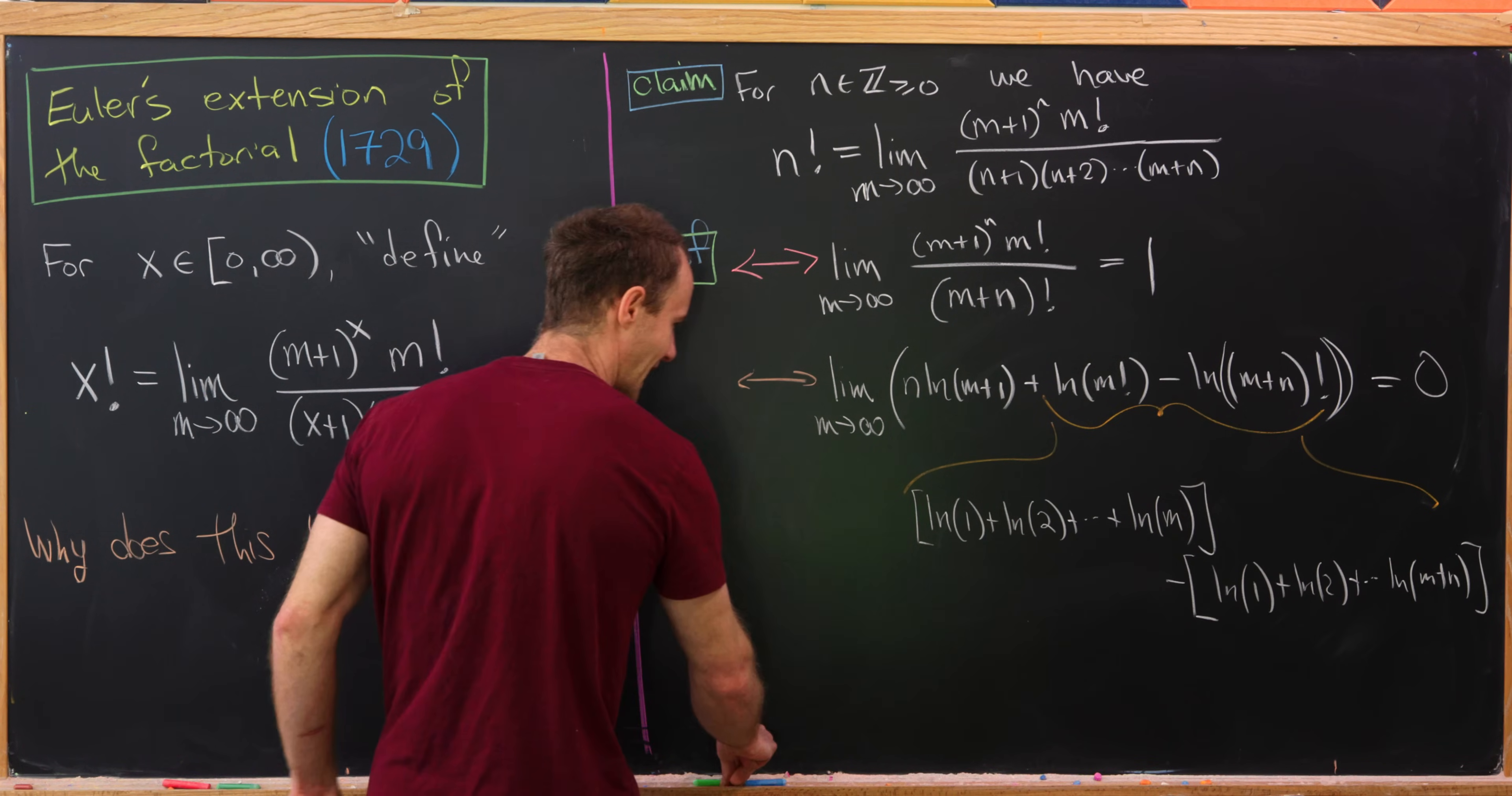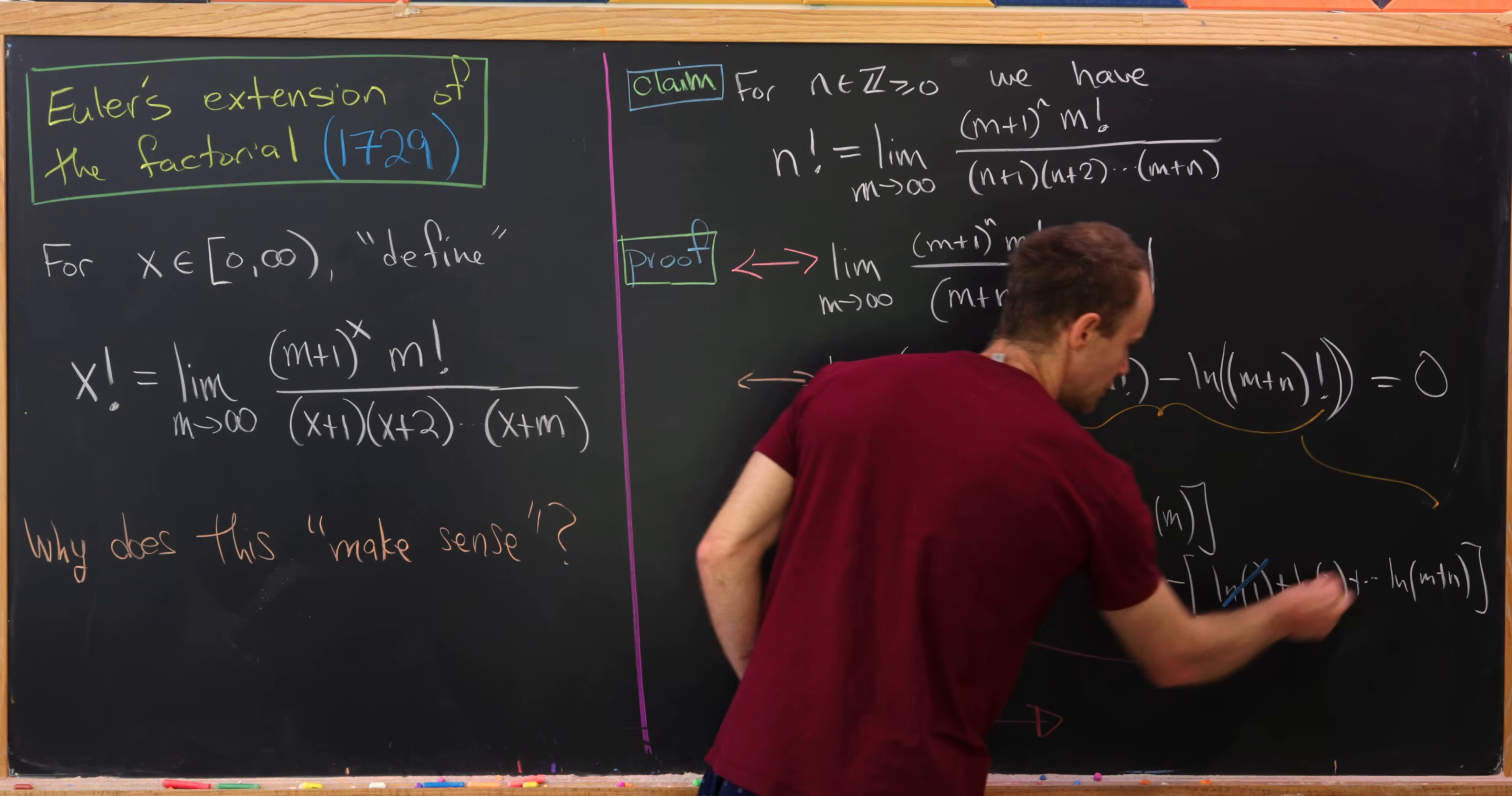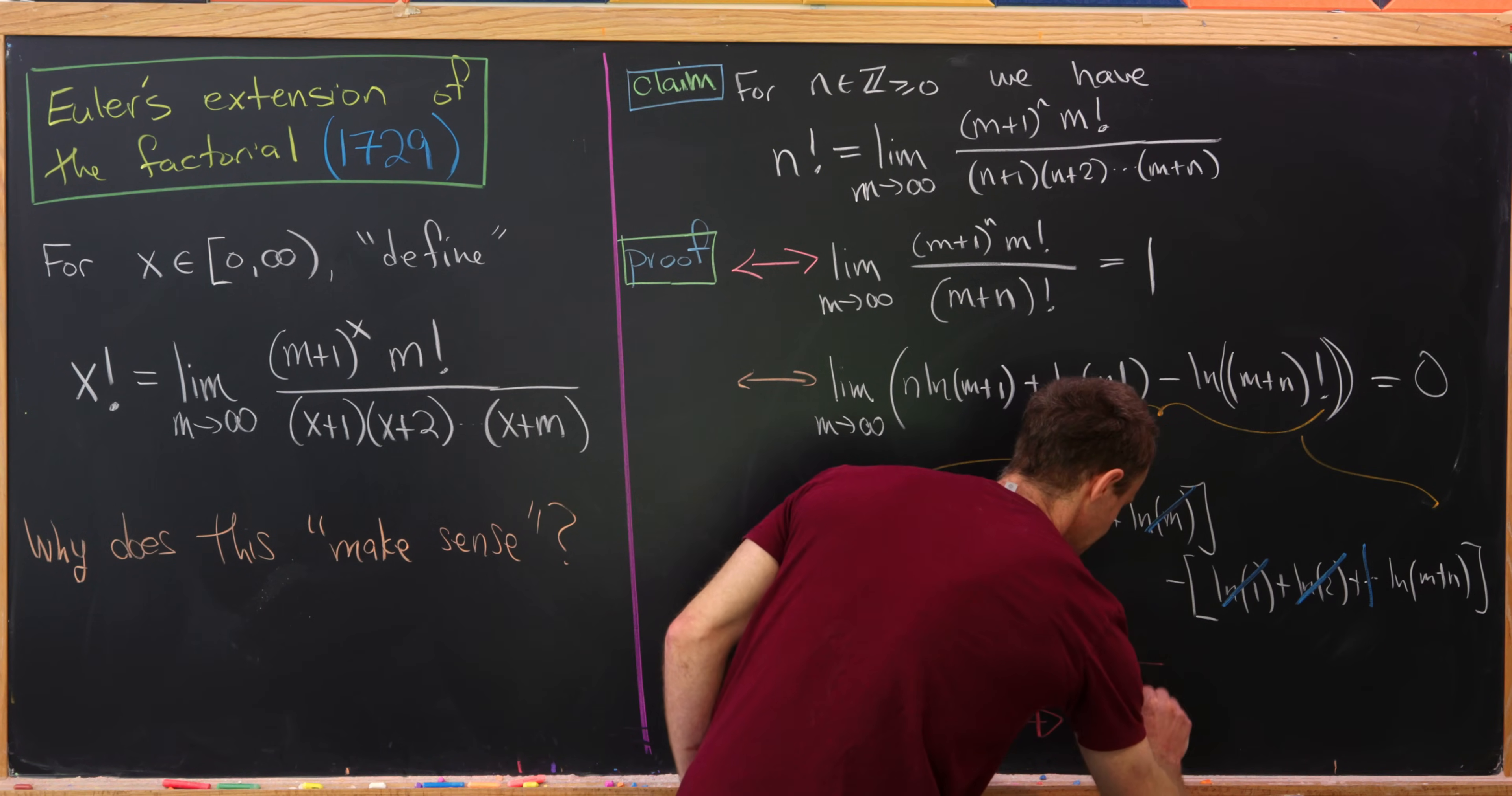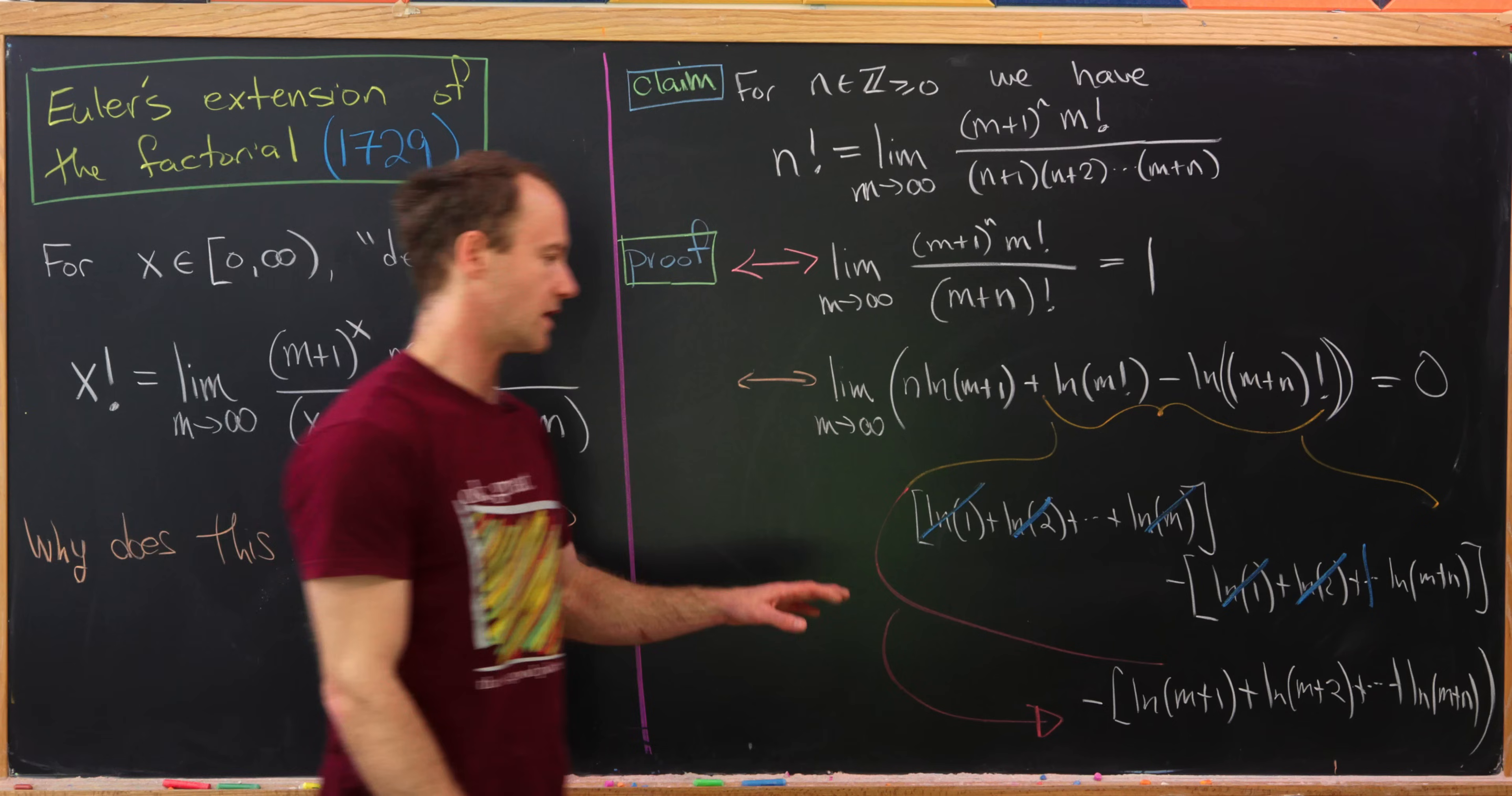But what will that turn into? Well I think we can see that a lot of the terms here will cancel. So this ln(1), well it's already zero but it already cancels with that as well. The ln(2) will cancel, and in fact this ln(m) will cancel with something in the middle there. And that'll leave us with minus ln(m+1) plus ln(m+2) ending at ln(m+n). Okay good.